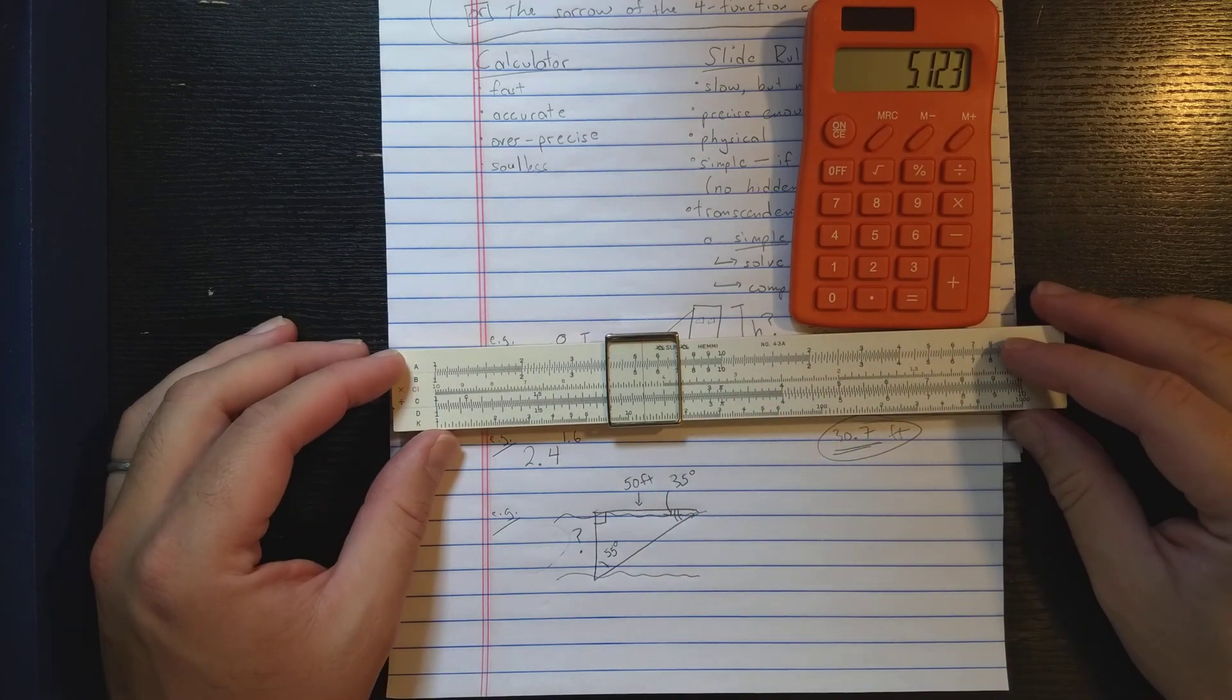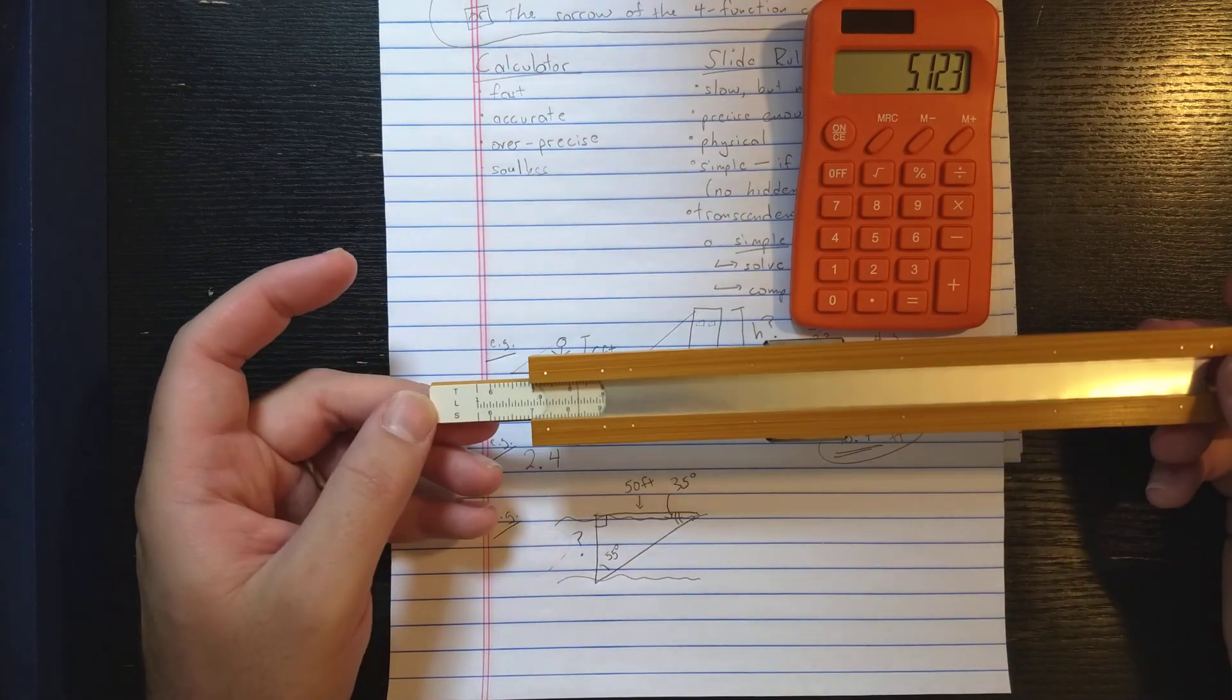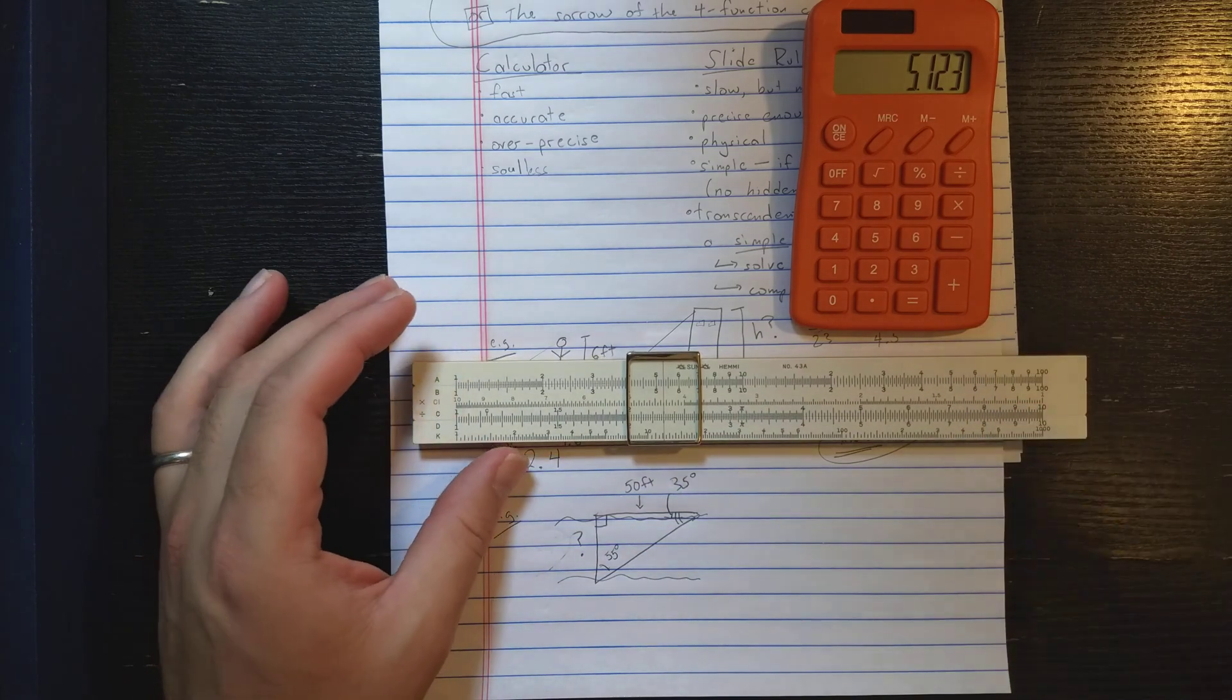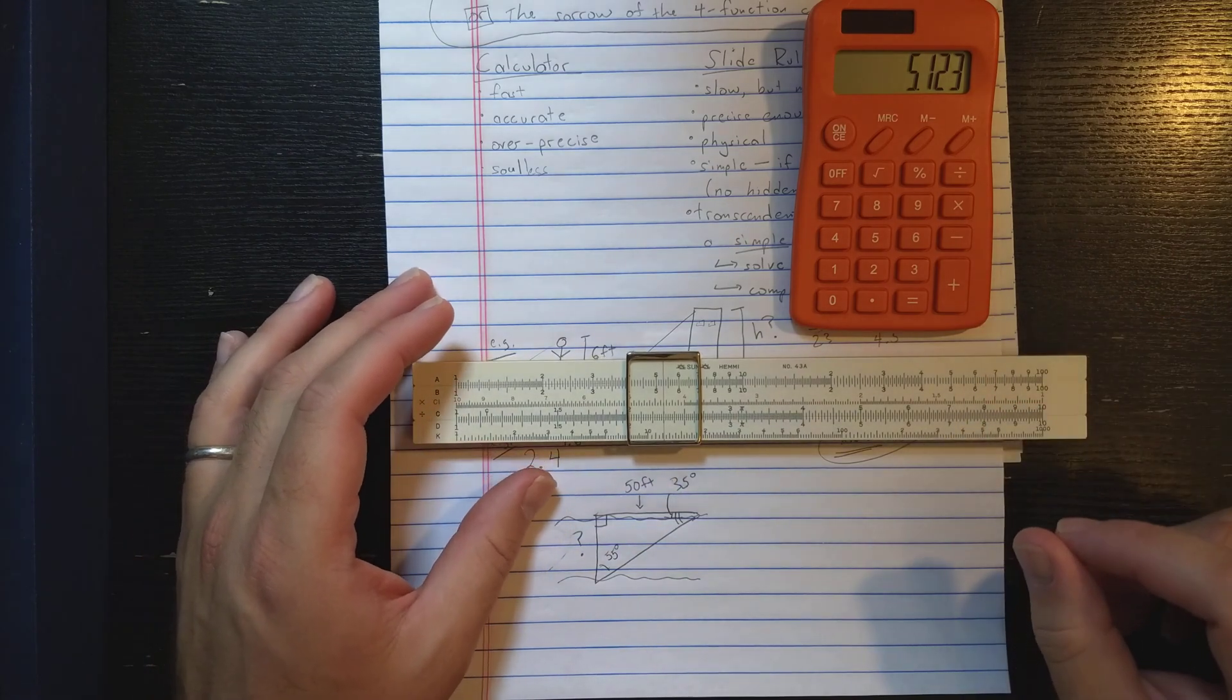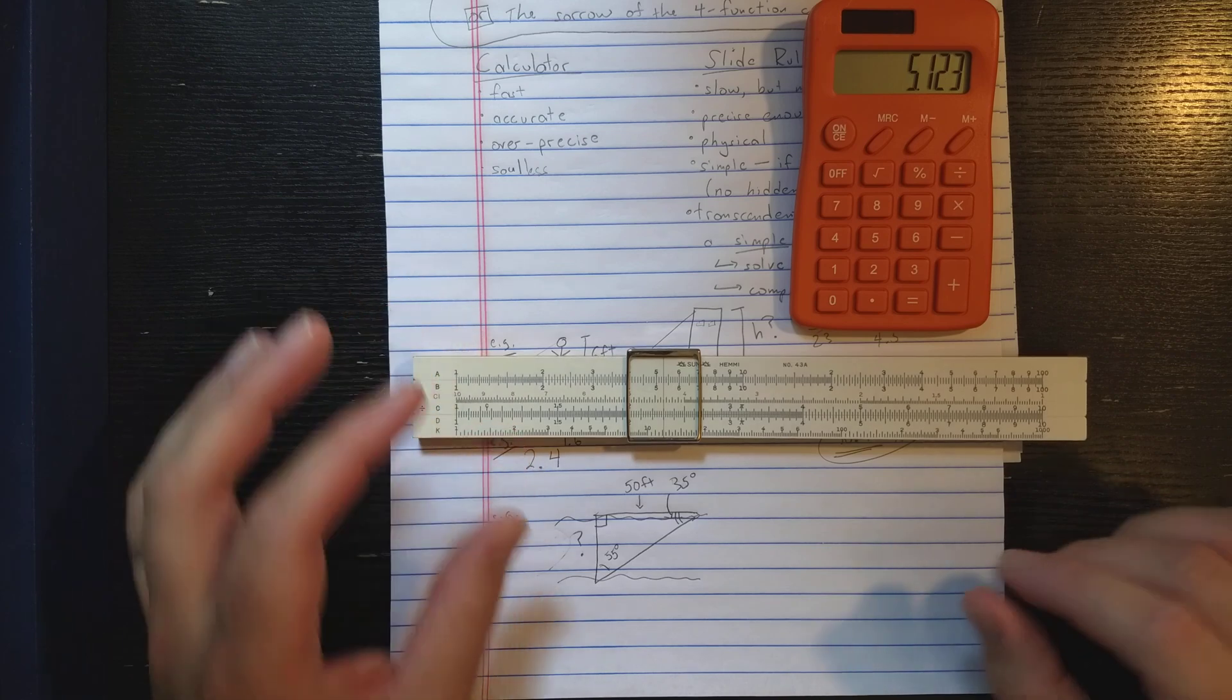So here you see, I have one, two, three, four, five, six scales on the front. And then I have these three scales on the back. And with those, I can compute trigonometry. I can compute exponential functions. I can really do pretty much anything you would need to do through high school.